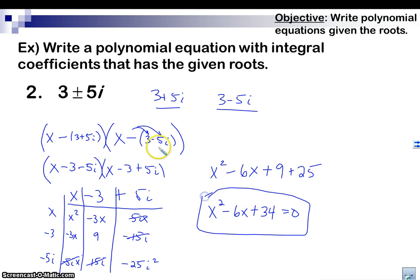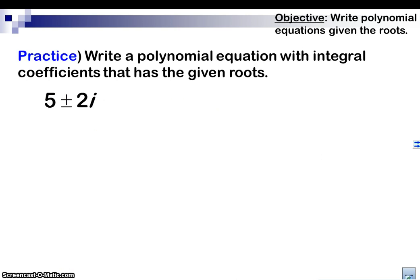All right, so that's how you do it with these imaginary, this complex root here, 3 plus 5i, 3 minus 5i. You want to make sure you do minus. Distribute the negative. Multiply it all out. Simplify. There you go. Here's one practice problem for you. Try it out.